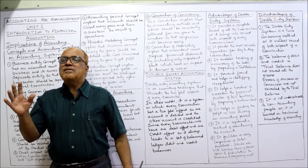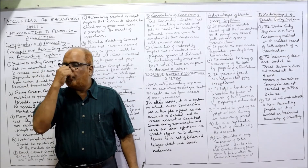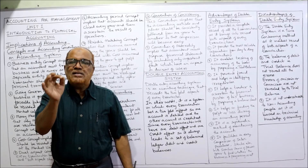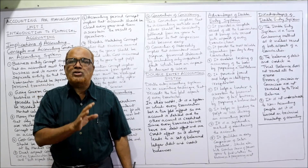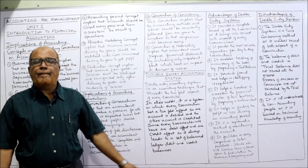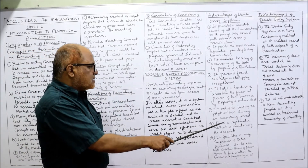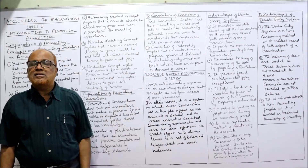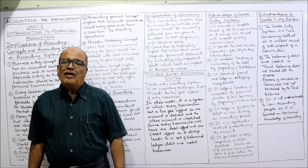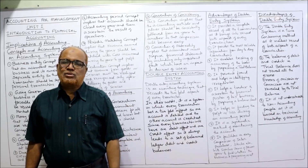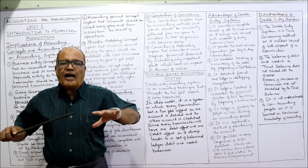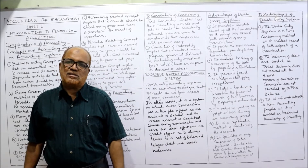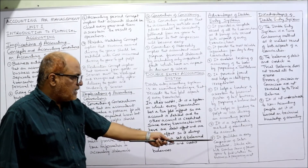The next advantage is it helps in finding out profit or loss during an accounting period. Every business wants to know whether it has earned a profit or incurred a loss. Easily and accurately, we can ascertain profit or loss during the accounting period. It is a systematic method of maintaining accounts — the most scientific system — and the accounts present a true and fair view of the financial activities.